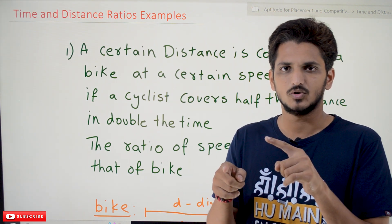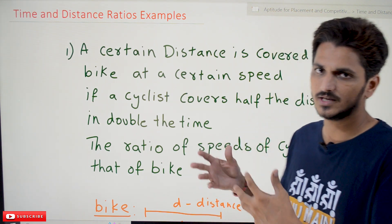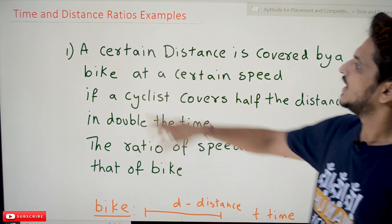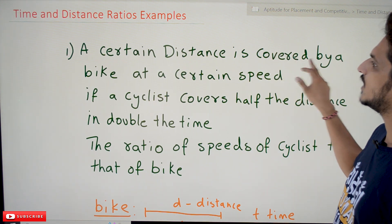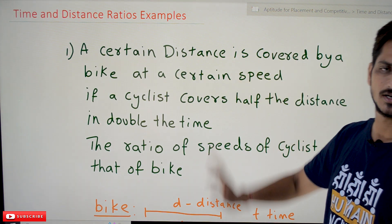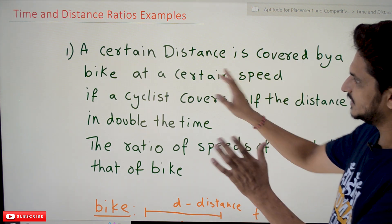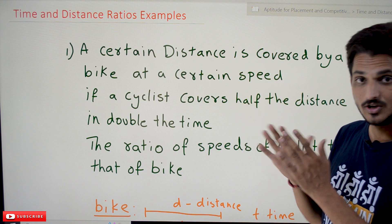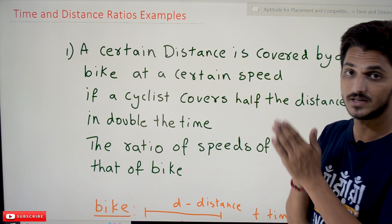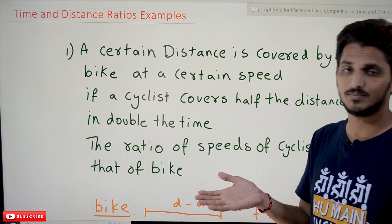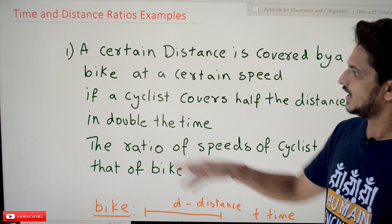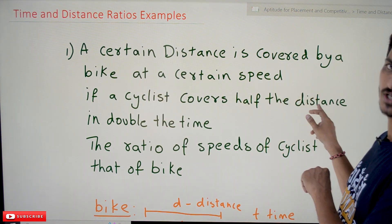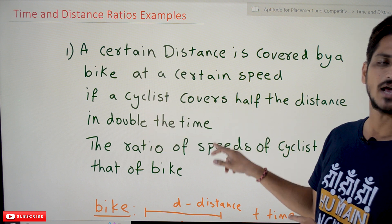Practice is very very important in aptitude. The first problem: a bike covers a certain distance at a certain speed. They did not mention the distance, they did not mention the speed, and they did not mention the time. A cyclist covers half the distance in double the time.